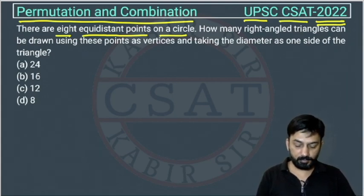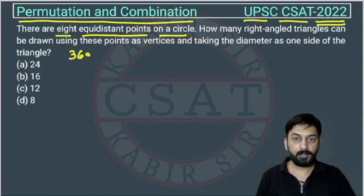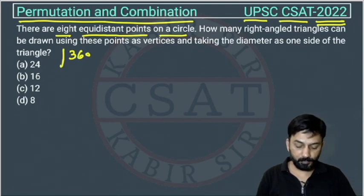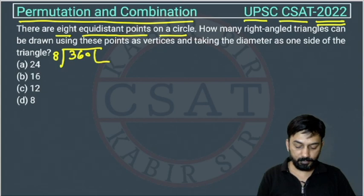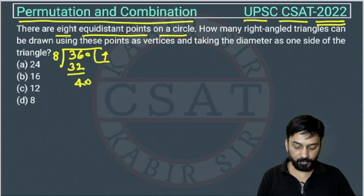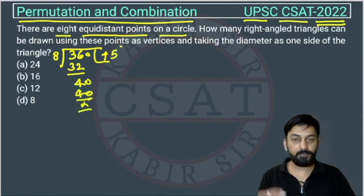We know that a circle has 360 degrees, and there are eight points which are equidistant. So we will find the angle difference: we divide 360 by 8, which gives us 45 degrees. So there will be a distance of 45 degrees between each point.